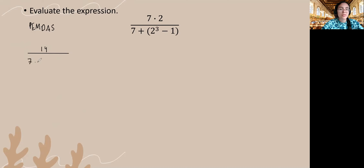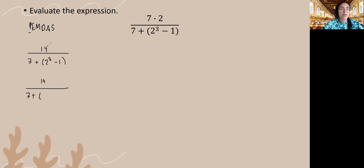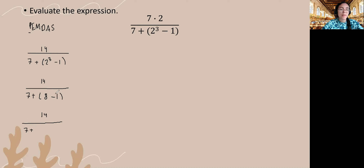I'm going to bring everything else down: 7 plus 2 cubed minus 1 in the denominator. But I also have parentheses that I failed to mention. So according to order of operations, I'll take care of whatever's in the parentheses first. I'll have 7 plus whatever is in here: 2 cubed minus 1. 2 cubed is 3 factors of 2, so 2 times 2 times 2, which is 8. Then I subtract: 8 minus 1 gives me 7.